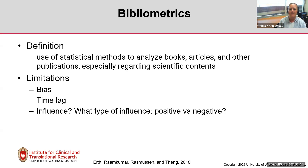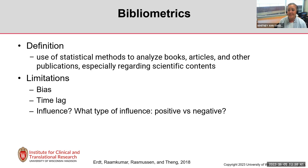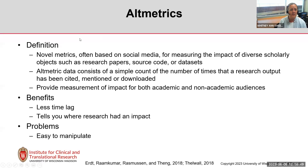Because of those limitations, some people have started looking at altmetrics — novel metrics, often based on social media, for measuring the impact of diverse scholarly objects. They're simple counts of citations, mentions, or downloads. The benefits are speed — they're almost immediate — and sometimes they provide more detailed information about the kind of impact. The tricky part is that they can be easy to manipulate.